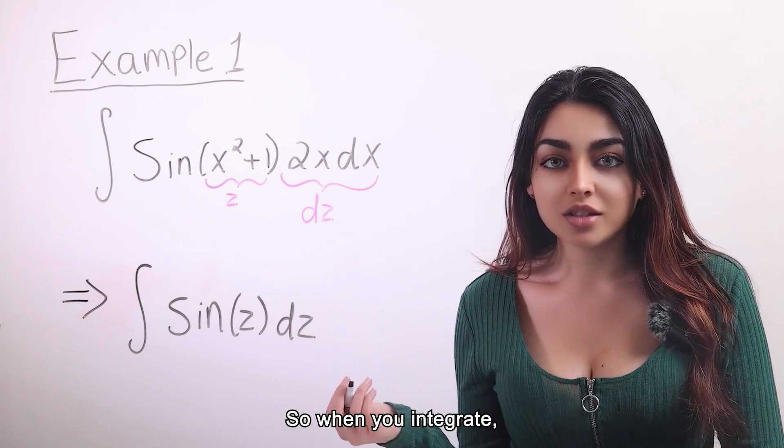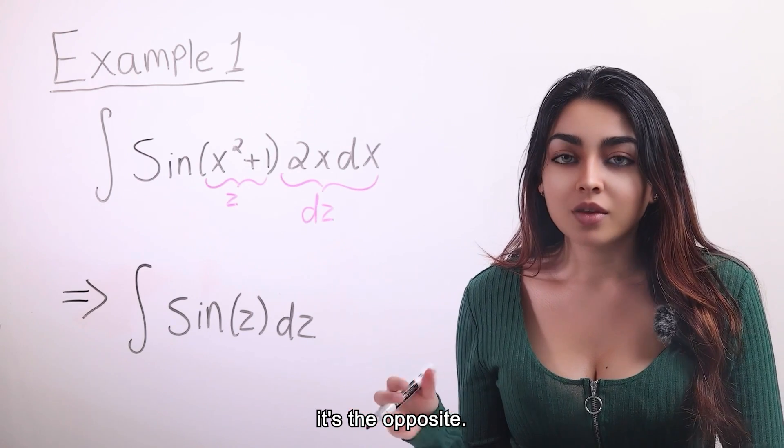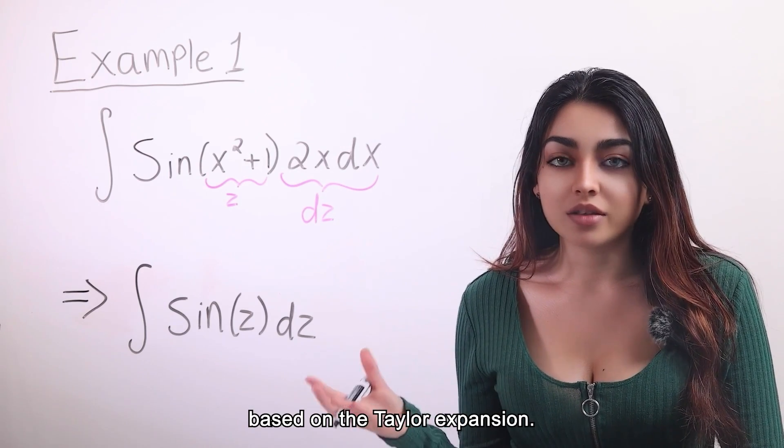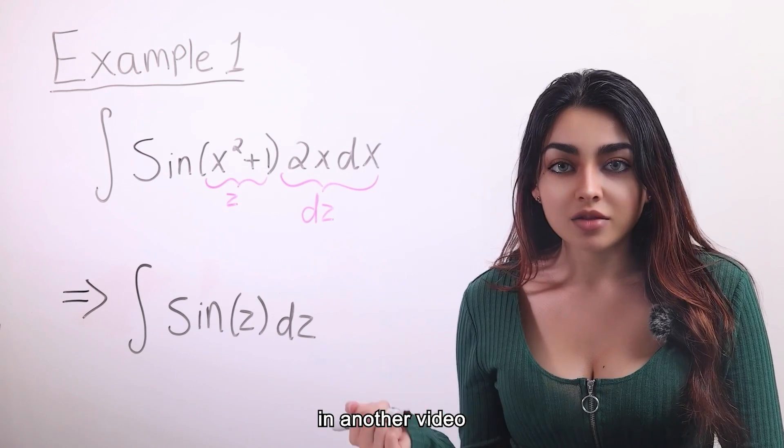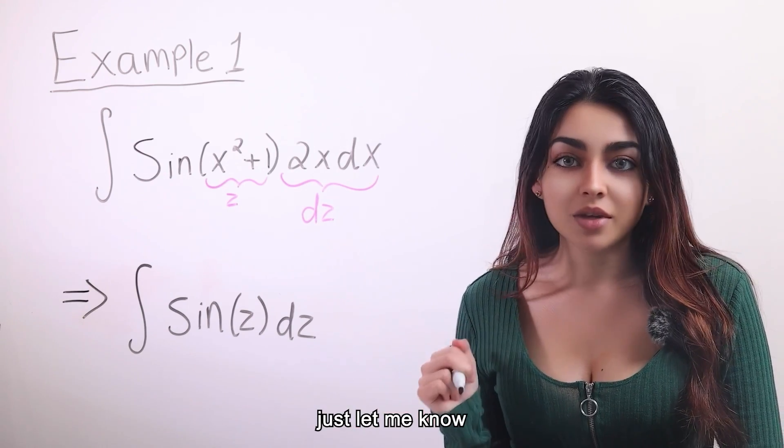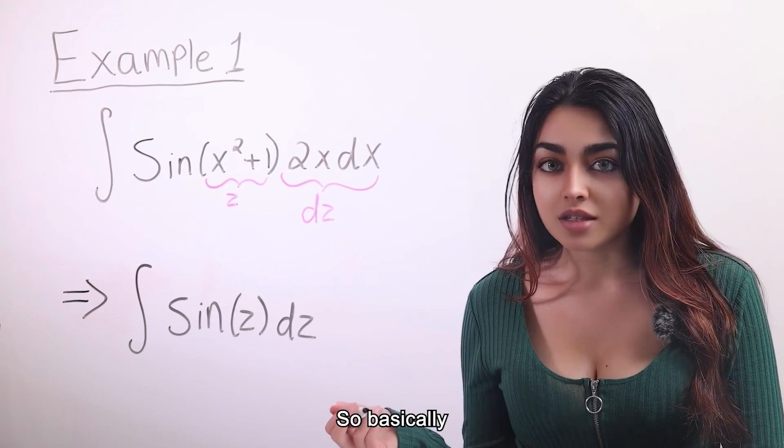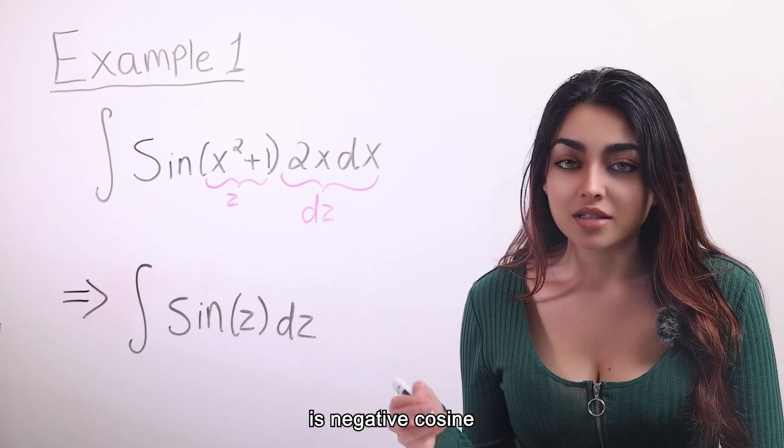So when you integrate, it's the opposite. Or you can also remember it based on the Taylor expansion. I can discuss this at length in another video if you would like, just let me know in the comments. So basically, the integral of sine is negative cosine.